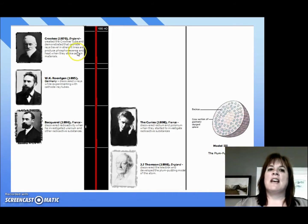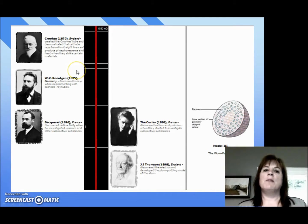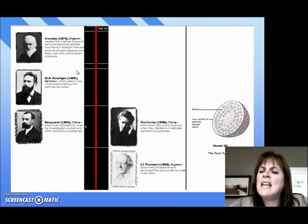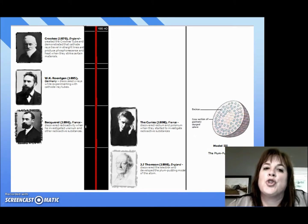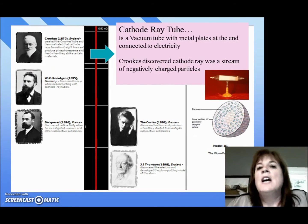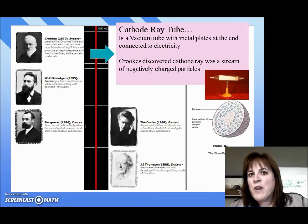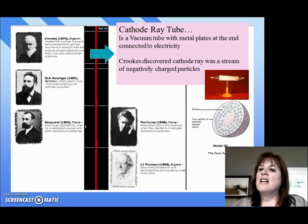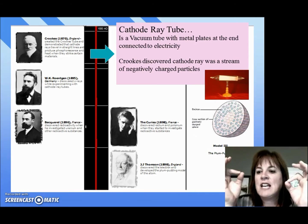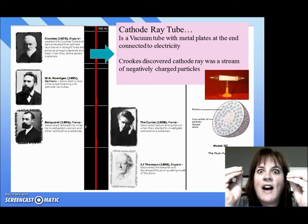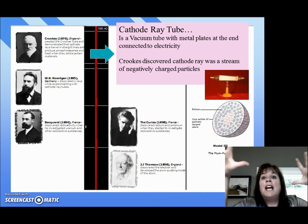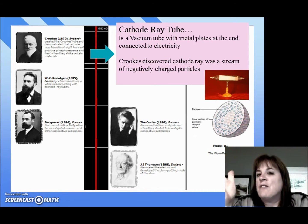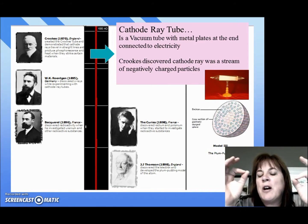Time goes by, and we have this guy named Crookes — William Crookes in England. He came up with what's called the Crookes Tube, which later we called the cathode ray tube. Basically, it's a vacuum tube that has metal plates on the end that we connect to electricity and a high voltage source. We get this beam of light, and he discovered that this was a stream of negatively charged particles.